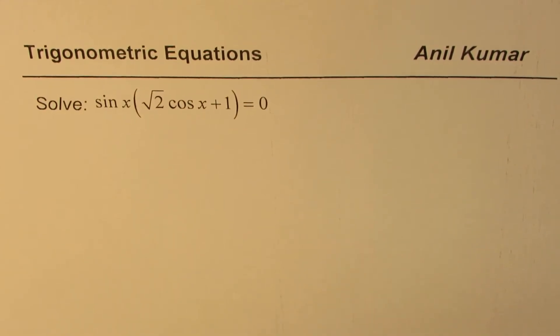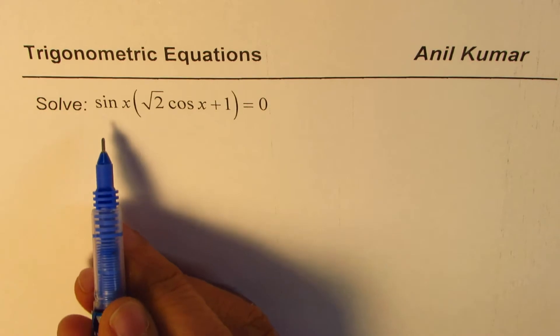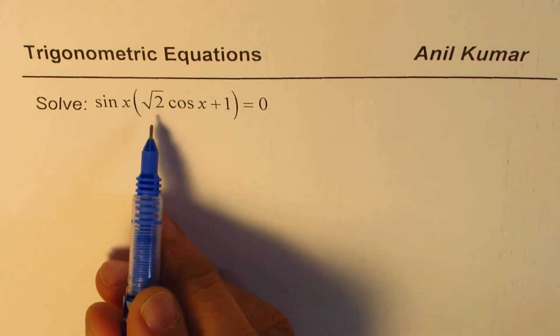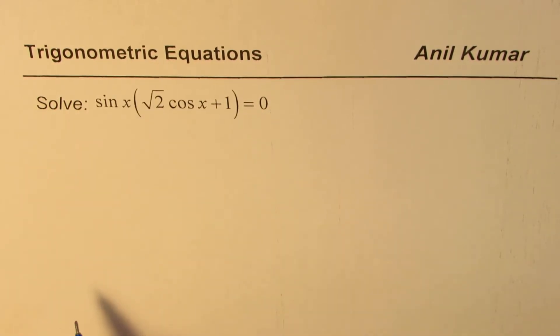I'm Anil Kumar and in this video we'll understand basics of solving a trigonometric equation given in factored form. So the equation is sin x times square root 2 cos x plus 1 equals to 0.